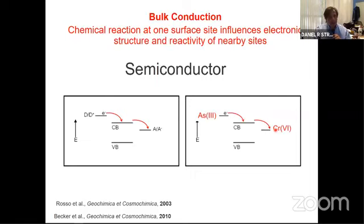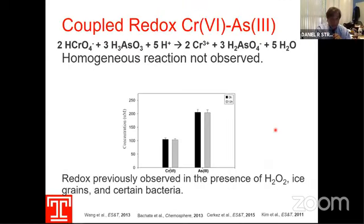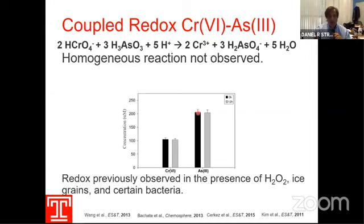In the dark, what we think is that the empty states in the conduction band of the semiconductor act as a wire connecting arsenite to chromate, allowing electrons to flow from arsenite to chromate. This doesn't occur in solution. There are actually a lot of sites that contain both chromate and arsenite. What we've done in our lab is just add chromate and arsenite in solution: this is the chromate concentration in the dark — you add arsenite, wait 12 hours, and you see about the same amount of chromate. Nothing happens. There's no redox chemistry in homogeneous solution.